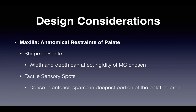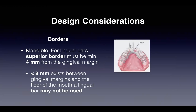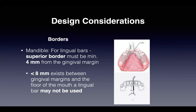Another anatomical consideration is tactile sensory spots. The anterior portion of the maxillary palate has more sensation, while the deepest portion of the palatine arch is more sparse. Regarding border design for the maxilla, borders must be a minimum of 6 millimeters from the gingival margin. For a lingual bar, the superior border must be a minimum of 4 millimeters from the gingival margin. If less than 8 millimeters exists between the gingival margins and the floor of the mouth, a lingual bar may not be used.